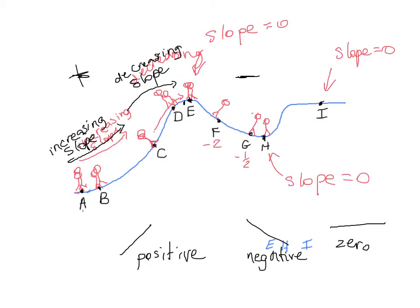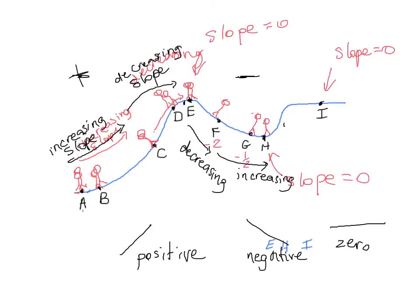Let's finish labeling the graph. Going from E to F, the slope goes from zero to negative, so it's decreasing. From F to H, the slope is increasing because it goes from negative and approaches zero. We can see something similar happening on the other side of the curve — it continues to increase until around a certain point, and then decreases back to zero.